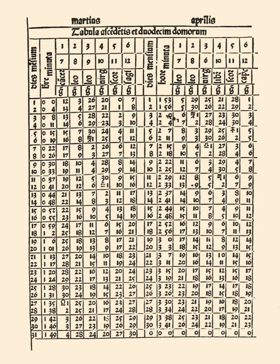The etymology is from Latin ephemeris, meaning 'diary', and from Greek, modern ephemeris, meaning 'diary' or 'journal'. Historically, positions were given as printed tables of values, given at regular intervals of date and time.